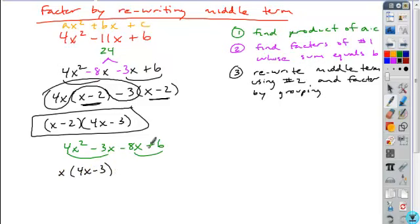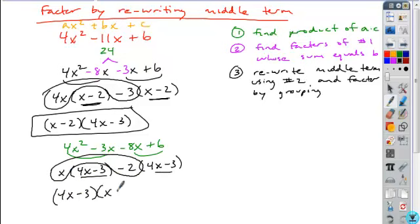What common factor can you remove from the second pair? Negative 2, leaving 4x - 3. You still have your common binomial factor. Remove that, and the remaining factors of x and negative 2 simply become the terms of our other binomial factor.